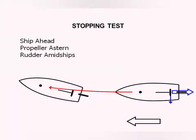In short, if I explain the stopping test it would be just three things. While the ship is going ahead at a constant speed, the ship's main engine is stopped and then given stern propulsion while the rudder is kept amidships.